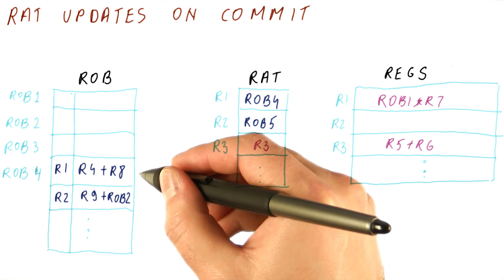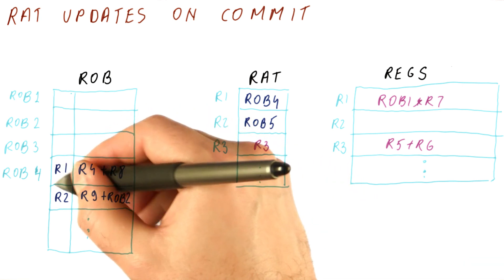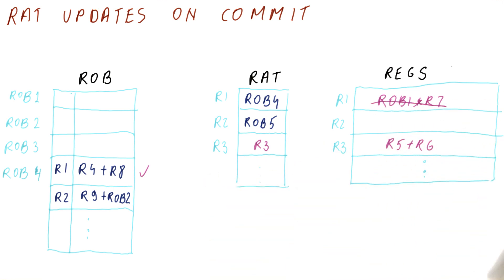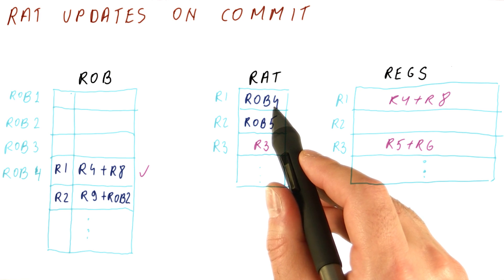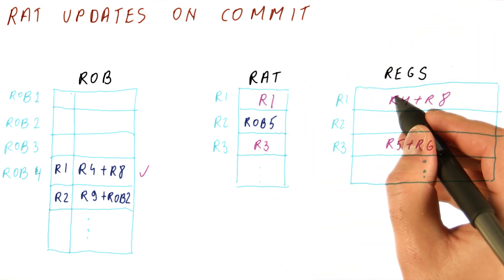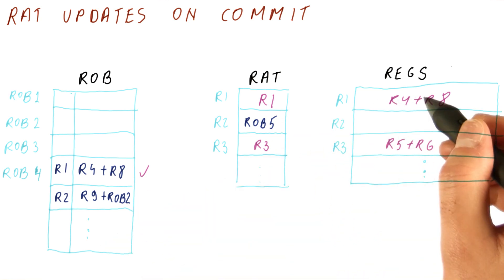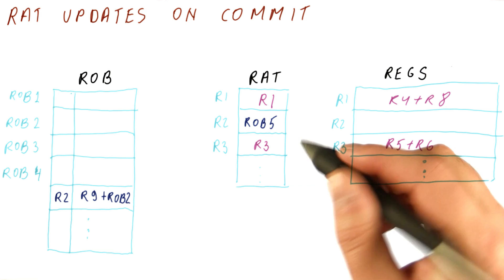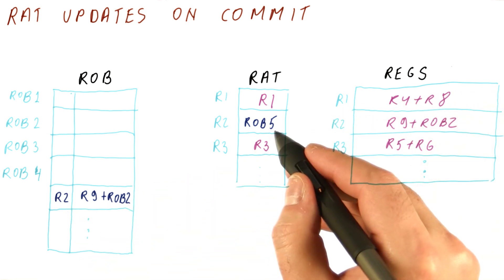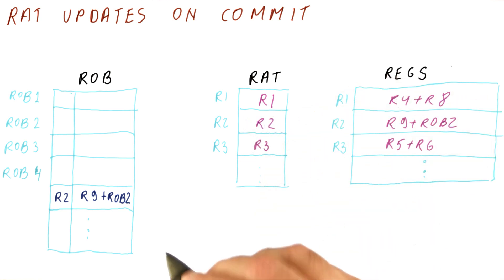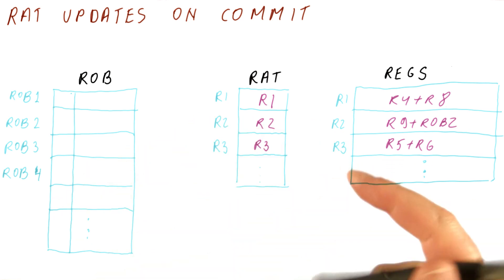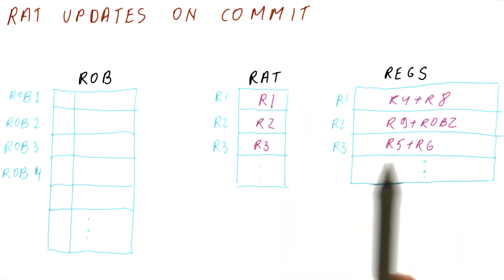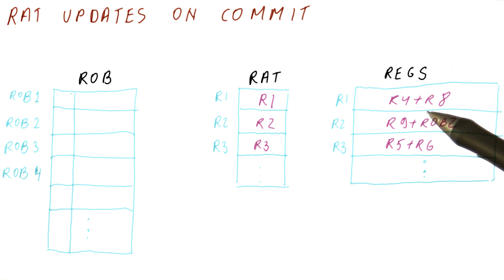Let's commit the remaining instructions. For R1 equals R4 plus R8, we write the result to R1 and check whether we are the latest rename — we are, so we make the RAT entry point directly to R1. We free this ROB entry. Finally, we commit the last instruction: write the result, check if we are the latest rename — yes — point directly to R1, and free the ROB entry. With no instructions left in the ROB, the entire RAT points directly to the registers and the registers are all up to date.